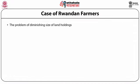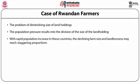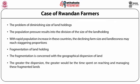The problem of diminishing size of land holdings is quite apparent in developing countries. Population pressure results in division of land holdings. In countries such as Malawi, Rwanda, Haiti, and Bangladesh, population growth rates are very high. With rapid population increase, declining farm size and landlessness may reach staggering proportions. Besides, the fragmentation of land holdings is another factor responsible for decreasing size. The fragmentation is concerned with the geographical dispersion of land — the greater the dispersion, the greater the time spent on reaching and managing these fragmented lands, leading to high opportunity costs and lesser agricultural productivity.